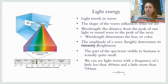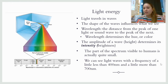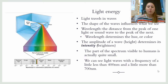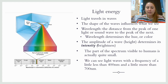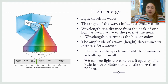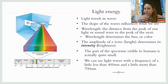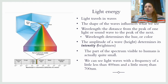Light is energy that travels in the form of waves, and the way the wave is kind of determines what we perceive. So the shape of the waves influences what we see. A wavelength is the distance from the peak of one light or sound wave to the peak of the next. Basically the wavelength — the distance from peak to peak in a single wave — is what's going to determine the color that you see.